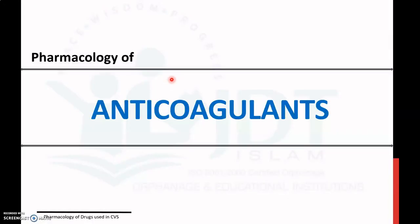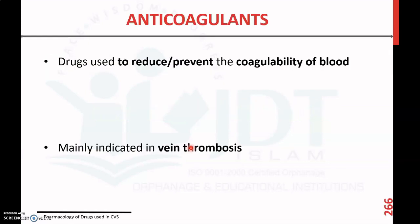In this video we will discuss the pharmacology of anticoagulants, an important topic from pharmacology of drugs used in the cardiovascular system. Anticoagulants, as the name indicates, are agents opposite to coagulants. They are mainly indicated in vein thrombosis to prevent and block further blood clot formation and further coagulation.